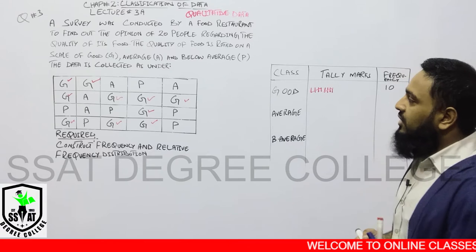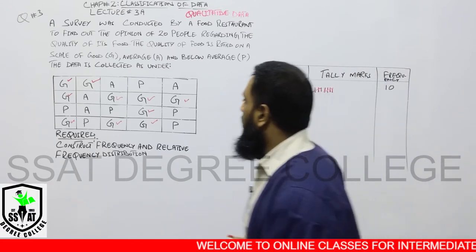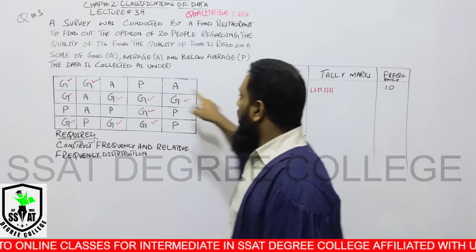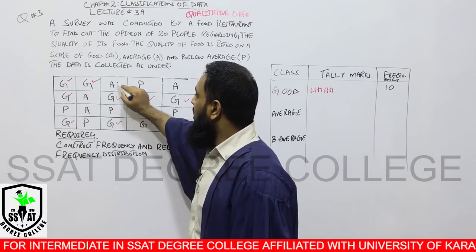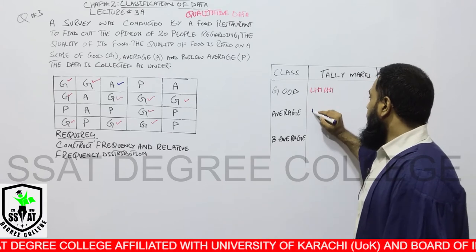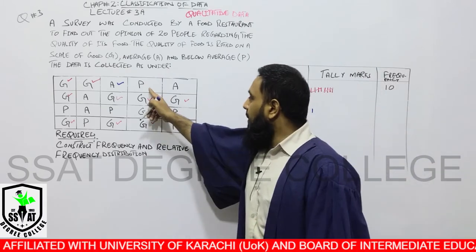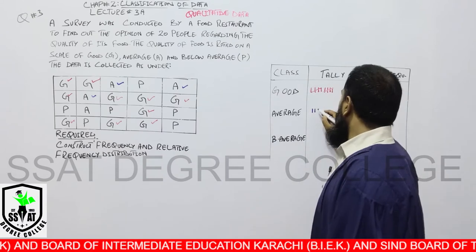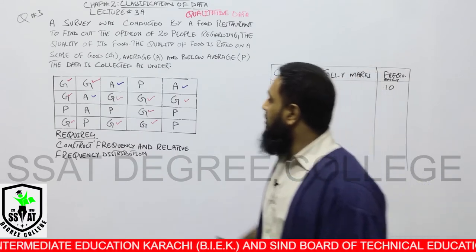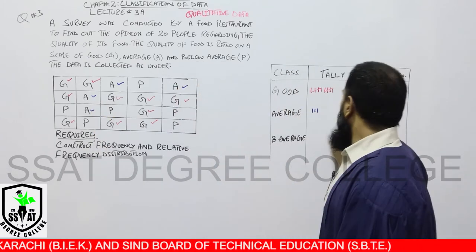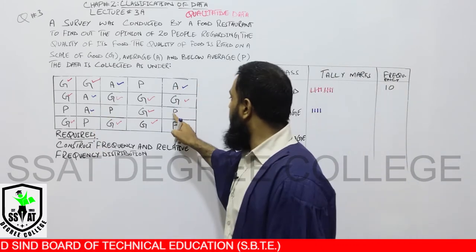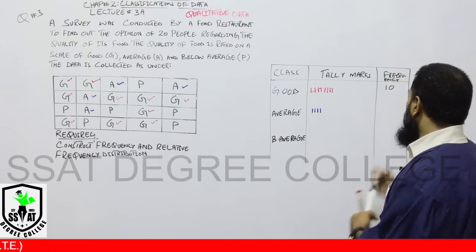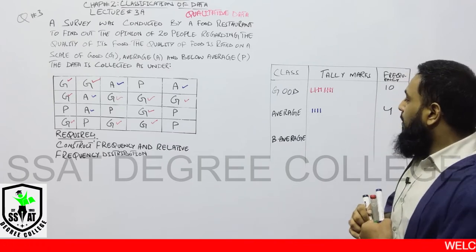وہ frequency 10 آ جاتی ہے۔ اسی طریقے سے اب ہم average کی بات کرتے ہیں۔ Average کو ہم نے A سے denote کیا تھا۔ تو ہمارے پاس A موجود ہے — ایک اور A، پھر ایک اور A، پھر ایک اور A۔ Total ہمارے پاس جو average موجود ہے اس کی تعداد 4 ہے۔